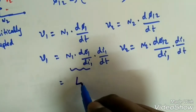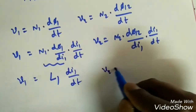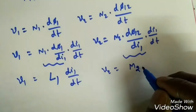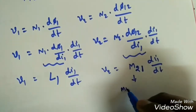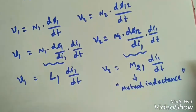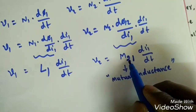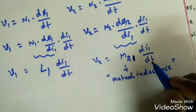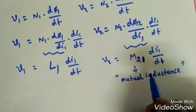Here, N1 · dΦ1/di1 is called the self-inductance L1, giving v1 = L1 · di1/dt. The parameter N2 · dΦ12/di1 is not the self-inductance but is called the mutual inductance of coil 2 with respect to coil 1, denoted M21. So v2 = M21 · di1/dt.